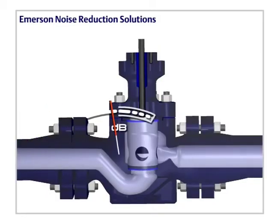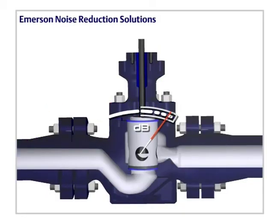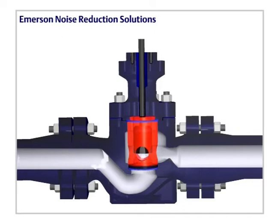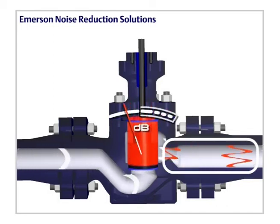Emerson noise reduction solutions. Vibration and aerodynamic noise from a control valve can be controlled by source treatments or path treatments. Source treatments involve the control valve, which is designed to reduce turbulence and the extent of the acoustic field.